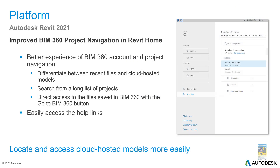They have also improved the home page of Revit. Now you can see things better, sorted better, and differentiate between recent files versus cloud-hosted models. You can also see a longer list of projects if you constantly jump from one project to another, and you can identify your BIM 360 models with the BIM 360 button icon.